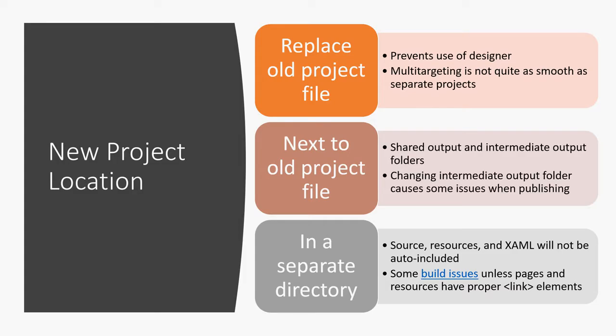One of the first things to think about when setting up our new csproj file is where it lives. The first option — recommended when .NET Core 3 is ready to go live on — would be to just replace the old project file, and use multi-targeting to target both .NET Framework and .NET Core. Right now that's not a great option because multi-targeting doesn't work well with the WPF designer. So if you need to use the designer, you can't rely on it with this new project.